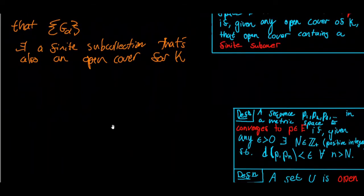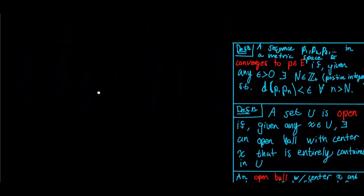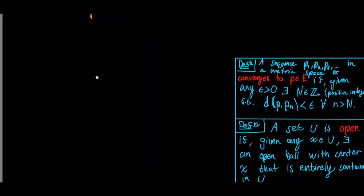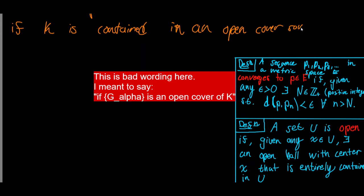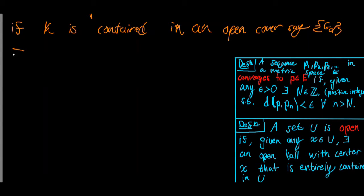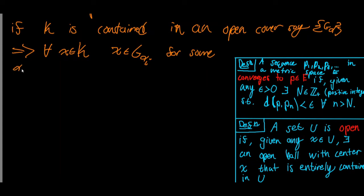Let me remind ourselves of these two definitions, which I'll have on the right for reference. If K is contained in an open cover — this collection of G_alphas where all G_alphas are open — then this implies that for every x in K, x is in G_{alpha_i} for some alpha_i in our indexing set I.